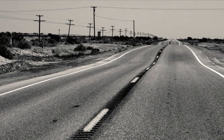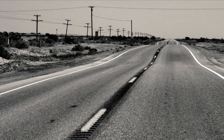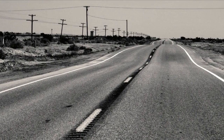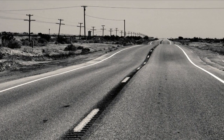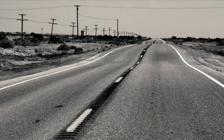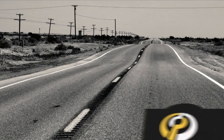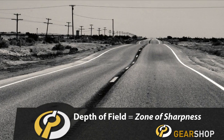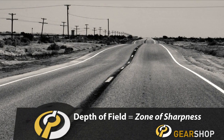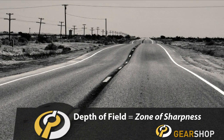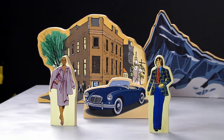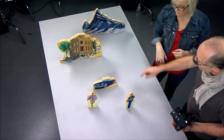Shooting at a small aperture makes a lot of sense for landscape photography, where you want everything in the scene to be sharp — like this desert road. In photography, the zone of sharpness is called depth of field. Now we're going to walk through a depth of field scenario using these models.